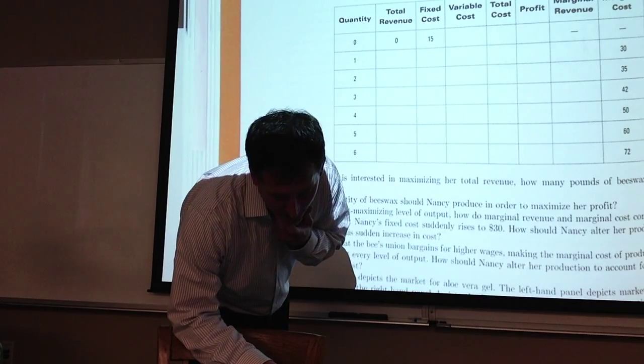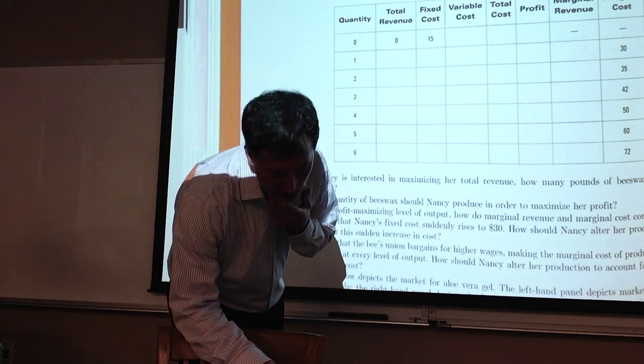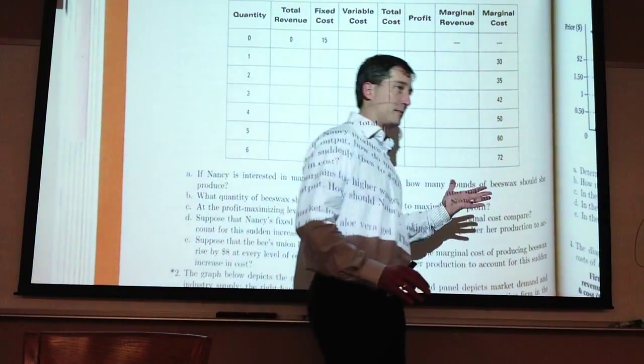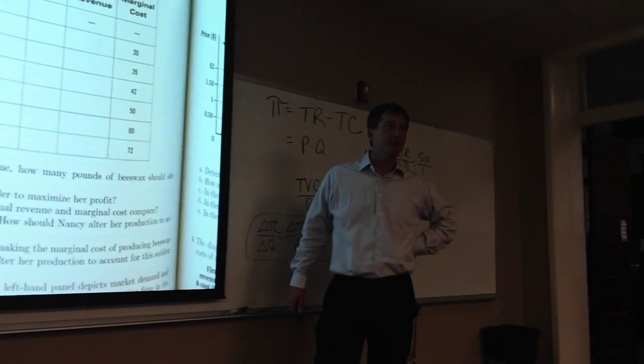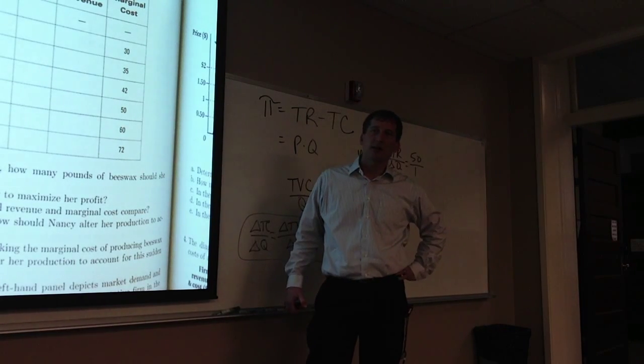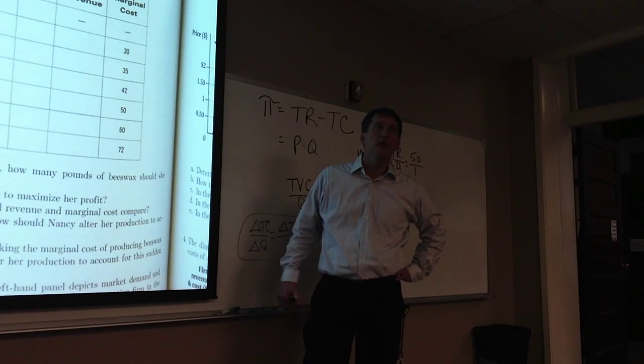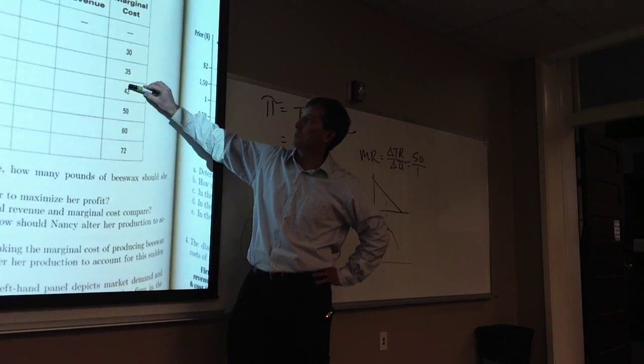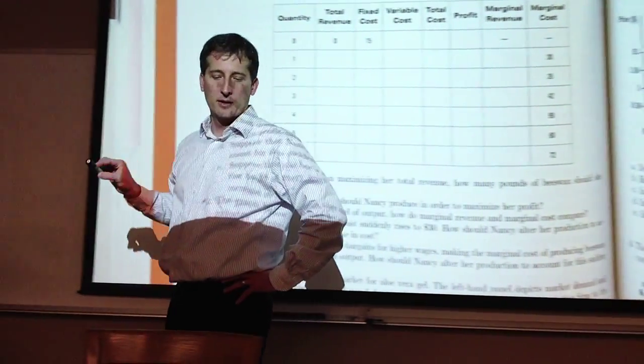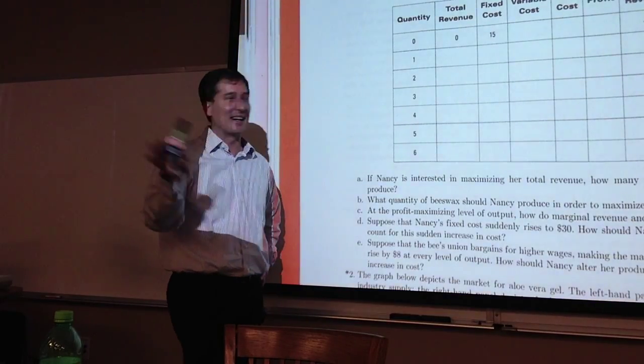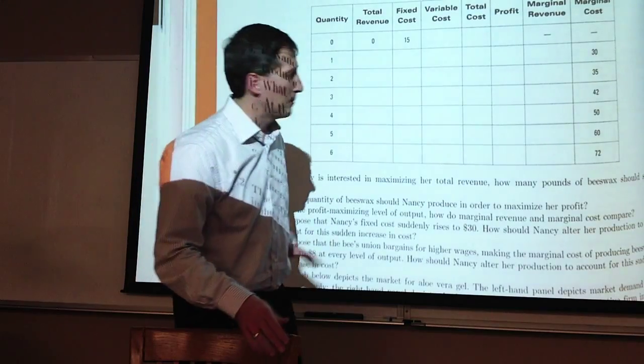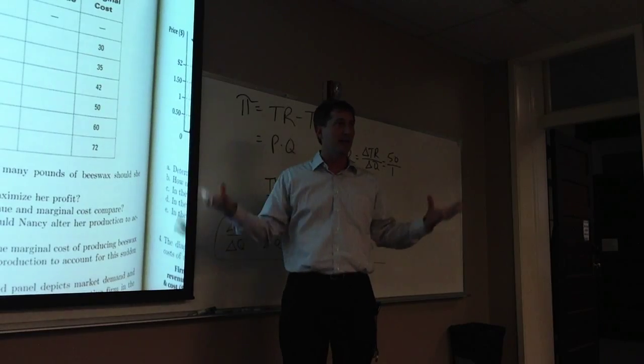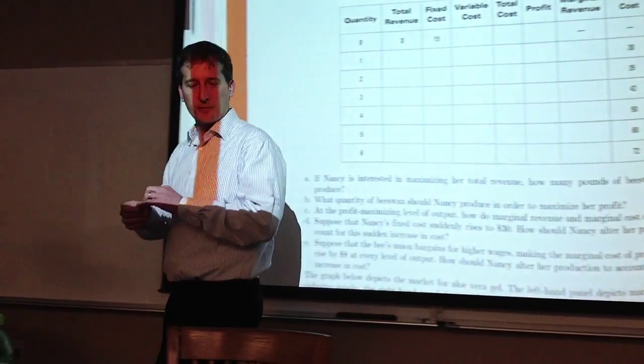Part E says now let's have some union bargain for higher wages causing the marginal cost to rise by $8 at every output level. So if costs go up by $8, the marginal cost goes up. We just add $8 to each one of these numbers. That's going to add $8 to this one and switch our profit maximizing quantity to being 3. That table adjusted all those numbers, so it was all related to Part E.